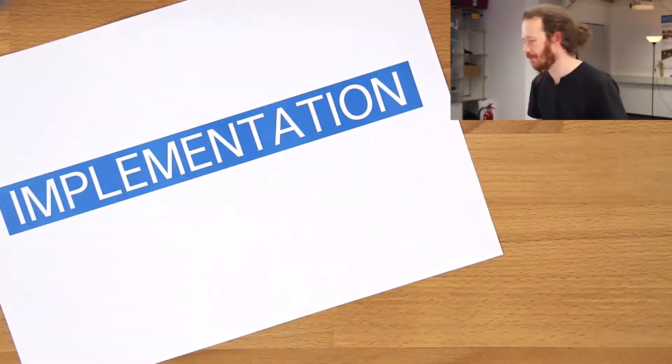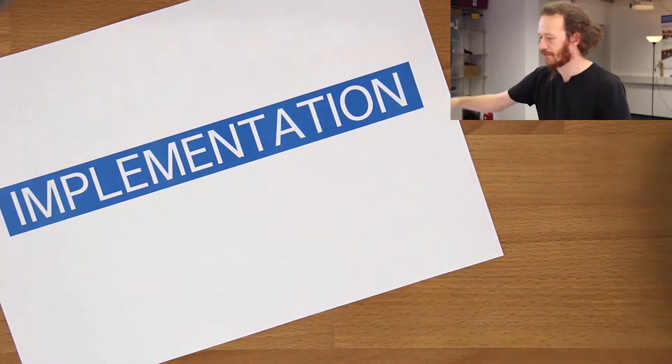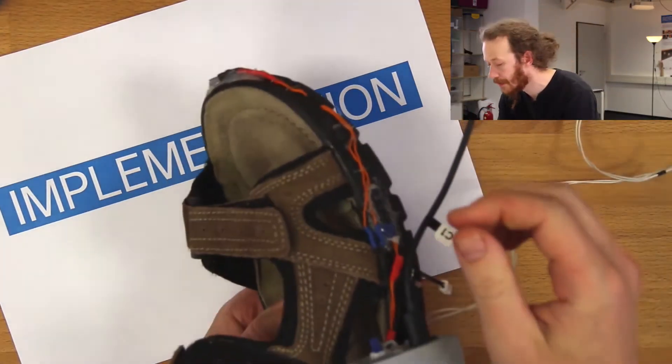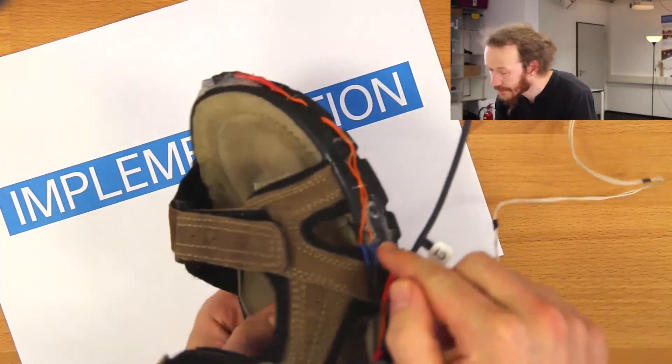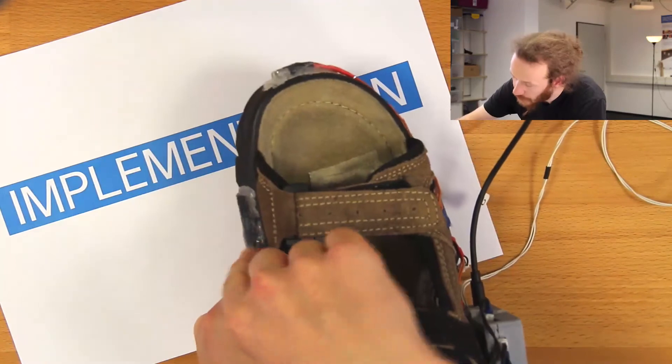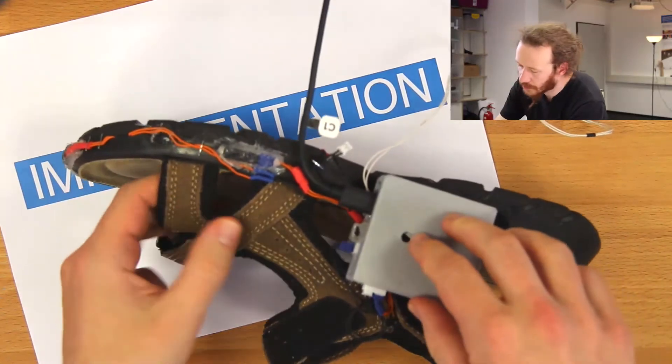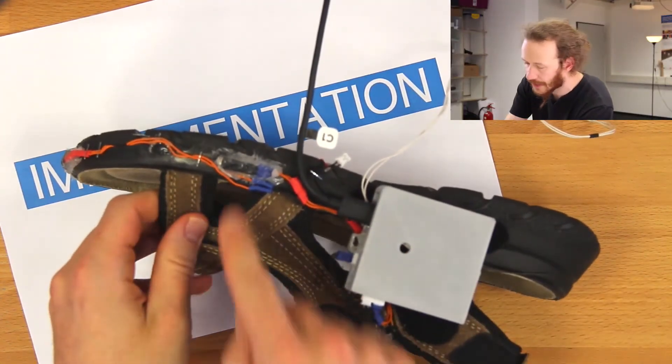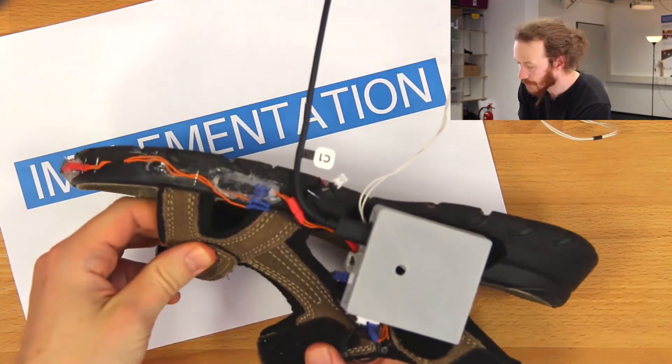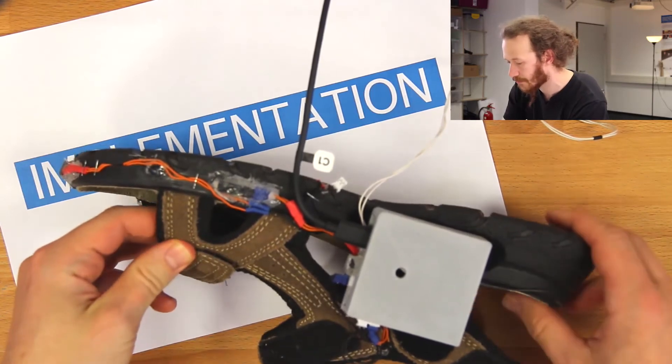So what did we actually build? What did we implement for this paper? We built a shoe. We added tactile actuators to a shoe and we embedded a pressure sensor inside of a shoe and we added electronics to it here for sampling the pressure sensor and actuating these actuators as I just described in the previous picture.